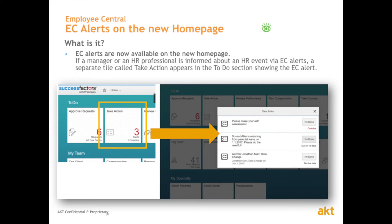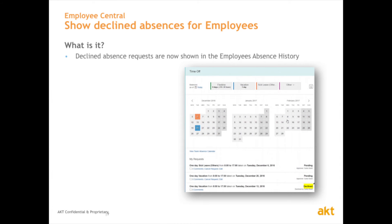Another nice feature coming up in this release has to do with alerts. Any alerts you're getting now — for example, an employee returning from parental leave on a certain date — where you want to take extra actions. You can configure an alert that will notify certain stakeholders in the organization. They are able to get all those alerts in one tile on the to-do section called 'Take Action.' This is new — previously it was just an email-based alert. This allows you to be more effective and manage your actions more efficiently. When you're done, you simply press the 'I'm done' button and it will be sorted out.